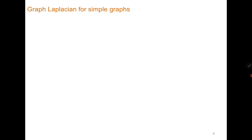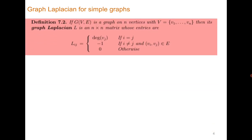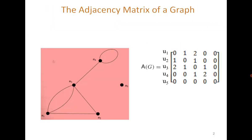The next concept is the graph Laplacian of simple graphs. Let G be any simple graph on n vertices represented as v1, v2, ..., vn. The graph Laplacian is an n×n matrix whose diagonal entries represent the degrees. From the adjacency matrix it is very easy to compute the degree of each vertex — to find the degree of v1, add all entries in row 1. For example, in this graph the degree of u1 is 3.